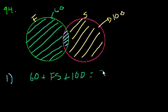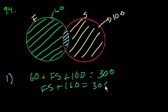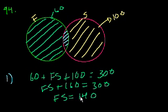And that equals 300. So people who study French and Spanish plus 160 equals 300. Subtract 160 from both sides, and you get 140 people who study both French and Spanish. So statement one is sufficient.